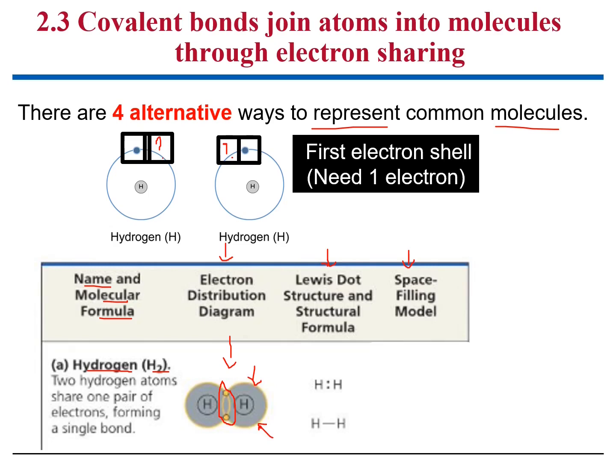In this one, you can just make a line, or you can have two dots representing the chemical bond that is created. And the simplest one will just give you a three-dimensional representation, which is the space-filling model.